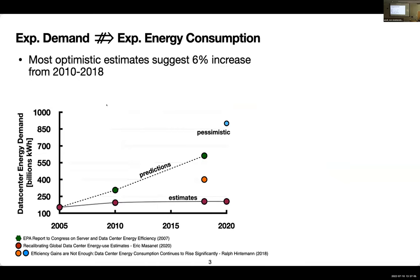When it comes to climate change, an important aspect is how computing demand translates into energy demand. Around 2005 it was predicted that the energy demand of computing would double every five years. However, in 2018 the same group updated their analysis and said that energy demand actually grew only by six percent from 2010 to 2018. While this study is widely quoted, other studies suggest the actual computing energy demand may vary anywhere between 200 terawatt hours to 900 terawatt hours.